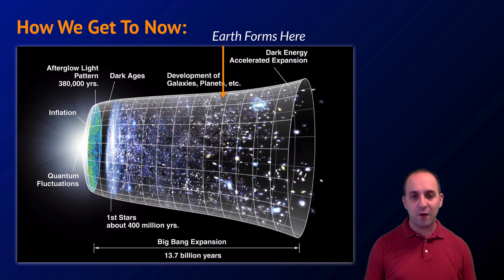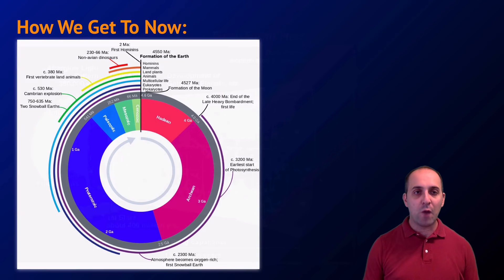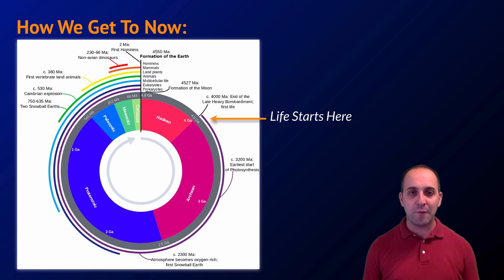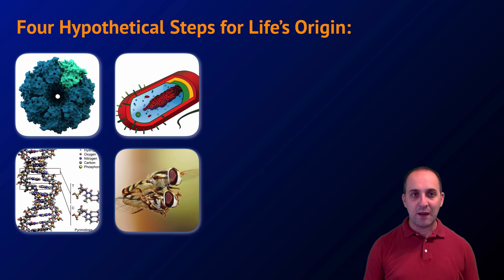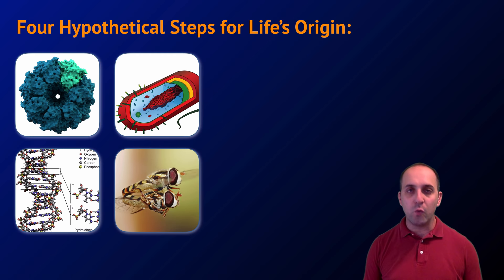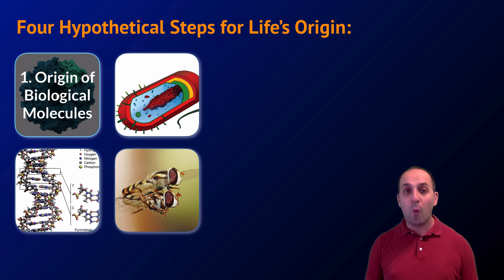Let's orient ourselves: the universe is about 13.7 billion years old from the Big Bang to now. The Earth forms around 4.5 billion years ago. Looking at Earth's history, life begins at the earliest about four billion years ago, and we are at the present day on the right side of this timeline.